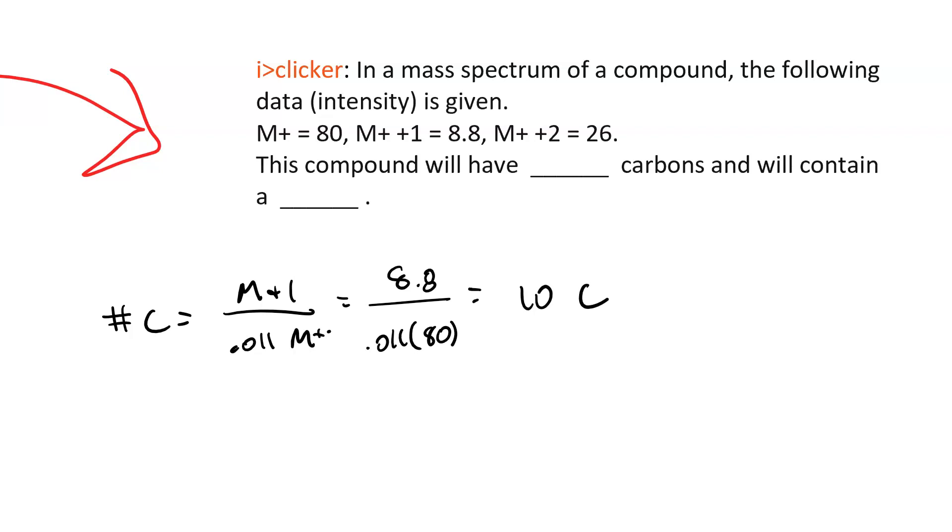And then our M plus over our M plus 2 equals 80 divided by 26, which equals 3.07. That means there's a chlorine. And if it had equaled 1, there would be a bromine.